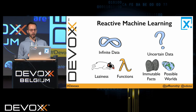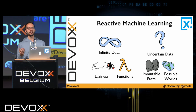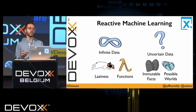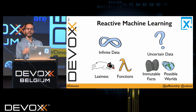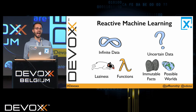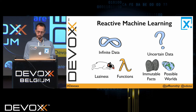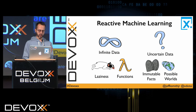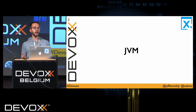From those two properties of the data, certain techniques fall out: laziness, higher-order functions, immutable facts, possible worlds — these are techniques used in other contexts and are among the many possible ways we can use these principles to guide us in a more actionable way in terms of how to build machine learning systems in a reactive manner.